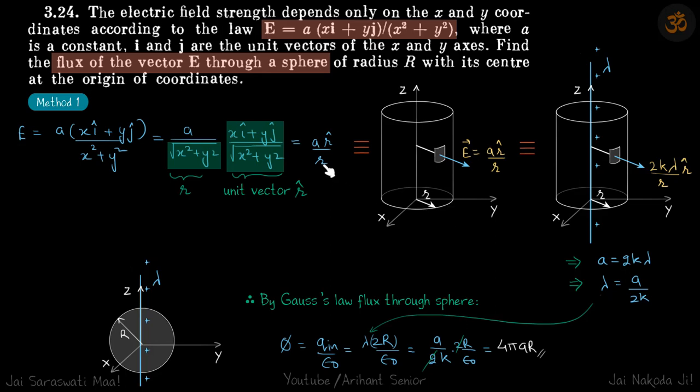This is the electric field which is given, a r cap by r. If you remember, the electric field due to a long straight wire is 2k lambda by r. Its direction is also radial if you consider the wire at the z axis. You can see that this electric field is similar to this. The direction is same and both are inversely proportional to the distance from the axis, which means this electric field is generated by a charged long wire.